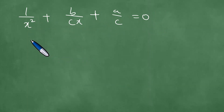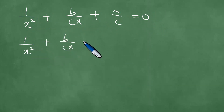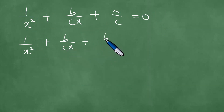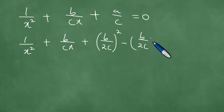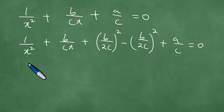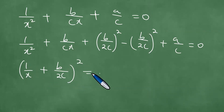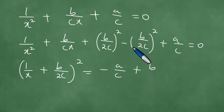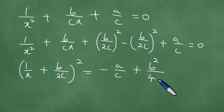Upon further examination, we are able to complete the square. We have 1 over x squared plus b over cx, and we take half of the coefficient of this expression. We square b over 2c, subtract b over 2c squared, and add a over c equals 0. Transposing, the term b squared over 4c squared moves to the right.